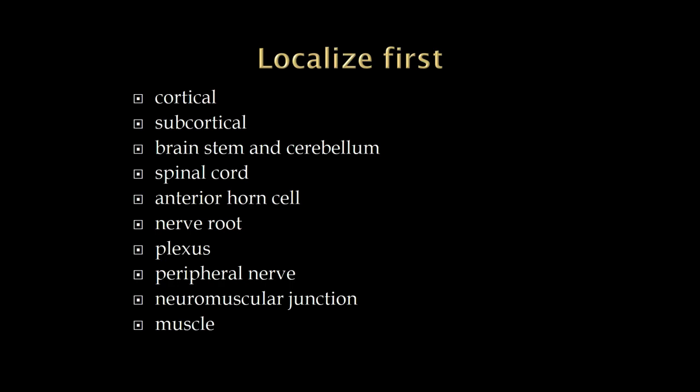When we're thinking neurologically, the first thing we want to ask is: where is the lesion? When we think of the neuro axis, we start with the cortex and subcortical structures — the white matter, the basal ganglia — then down to the brainstem and cerebellum, spinal cord, anterior horn cells in the spinal cord, nerve roots, plexus, peripheral nerve, the neuromuscular junction, and muscle. We need to localize where is the lesion.